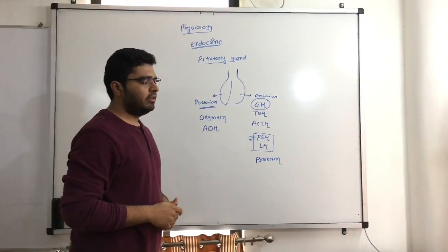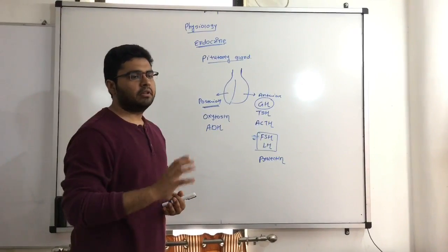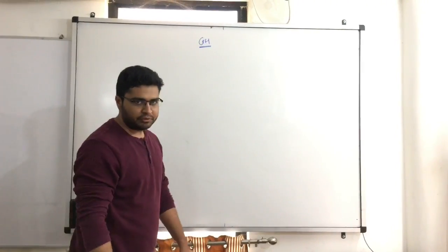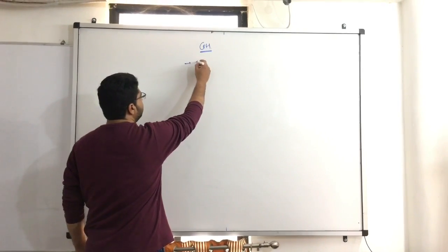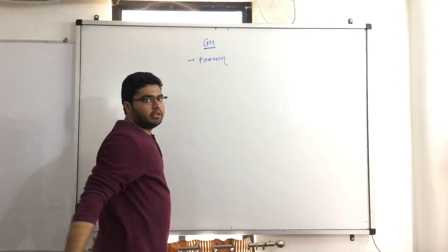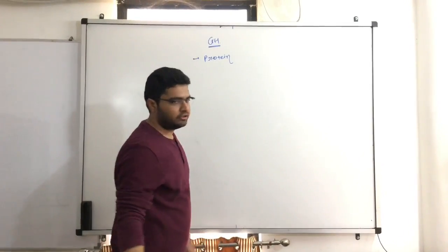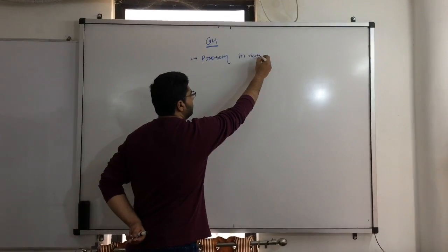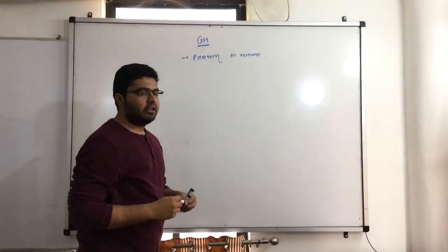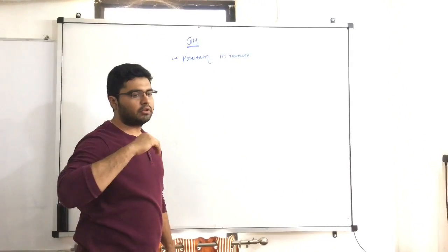Now let's discuss the growth hormone. We will discuss its chemistry and how it acts on different parts of the body. Growth hormone is secreted from the anterior pituitary gland. It is a protein hormone, made up of amino acids — it is protein in nature.